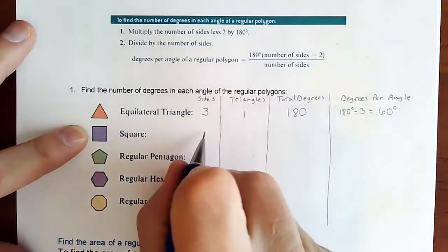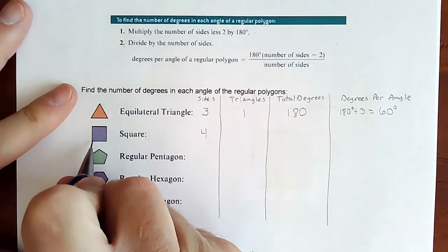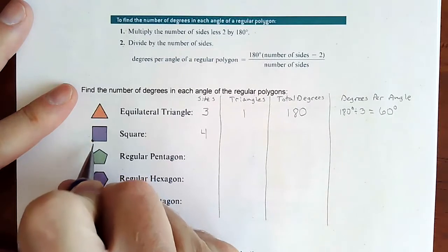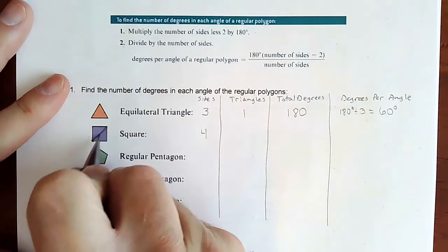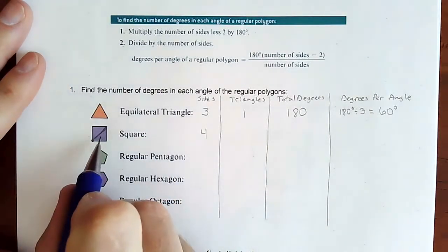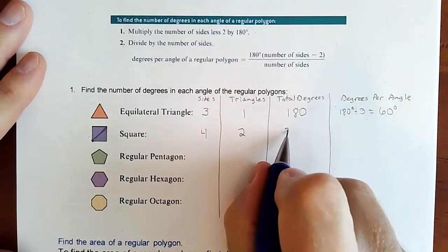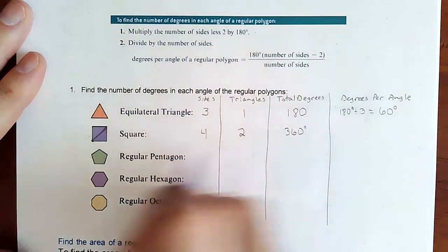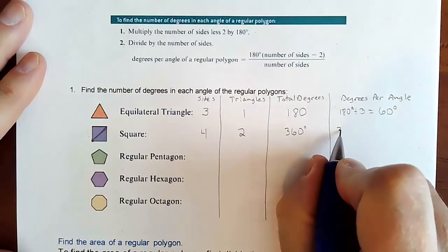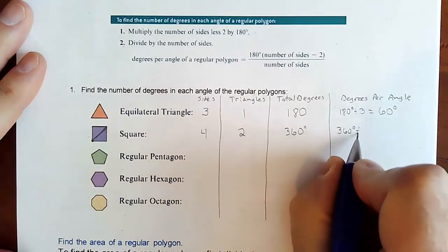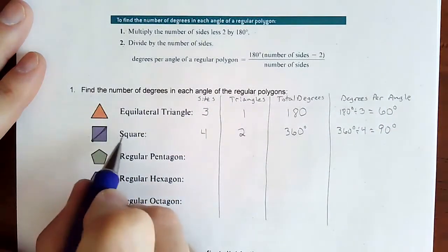On a square, which has four sides, here's the triangle idea: we take one corner and connect it to any diagonals we can create. There's only one diagonal, but that one diagonal creates two triangles. If we have two triangles, we have 360 total degrees, which makes the four-sided shape have 360 degrees total. We even that out by dividing by four — 360 divided by four gives us 90 degrees, which makes sense because it's a square.